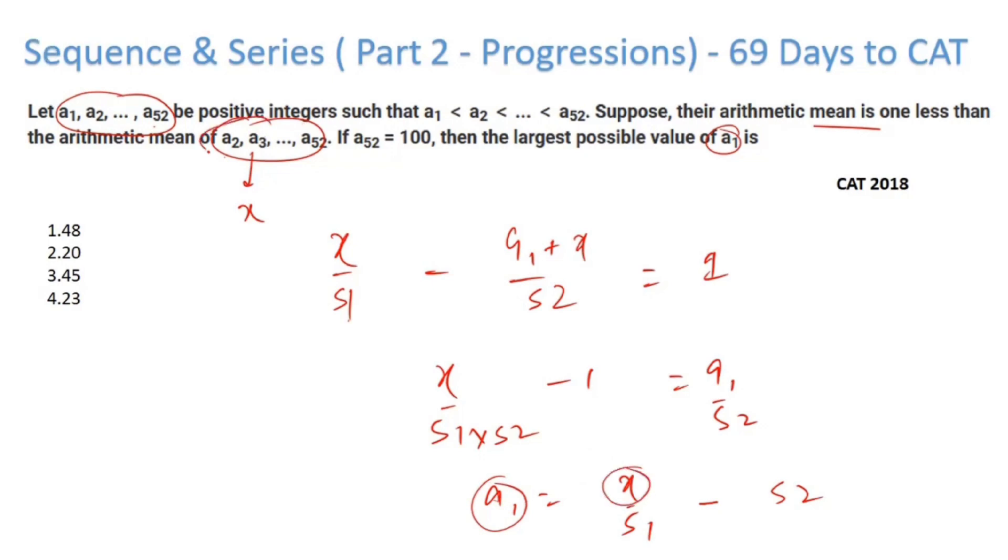Now I have to get the maximum value of a₁. For that I need to get the maximum value of x. What is x? X is the sum of these numbers. Now what I can do is I can take all the bigger numbers.